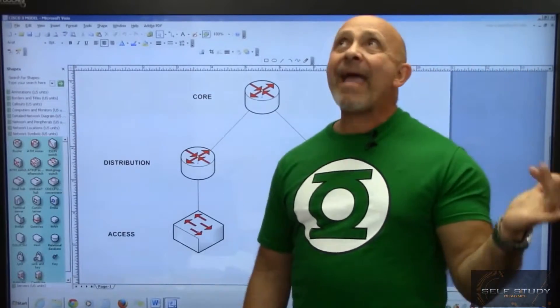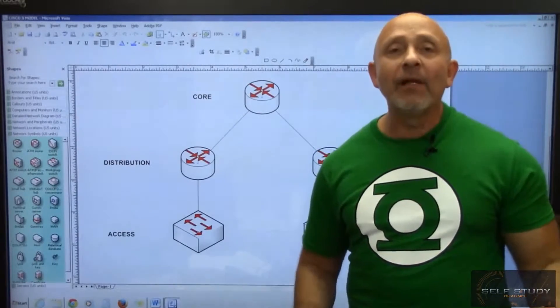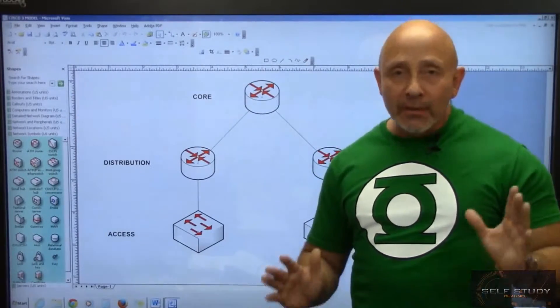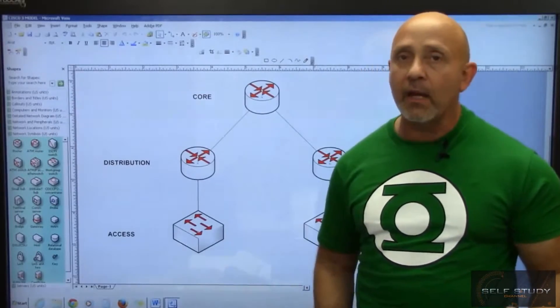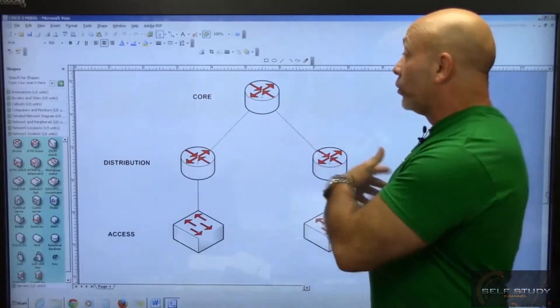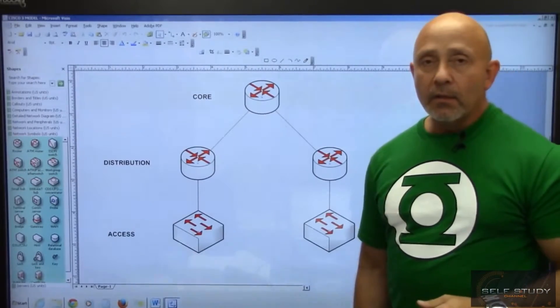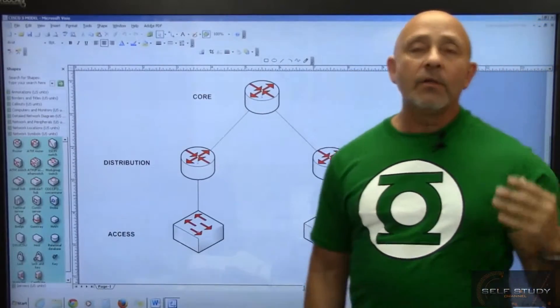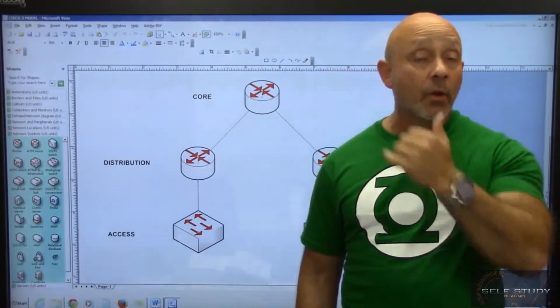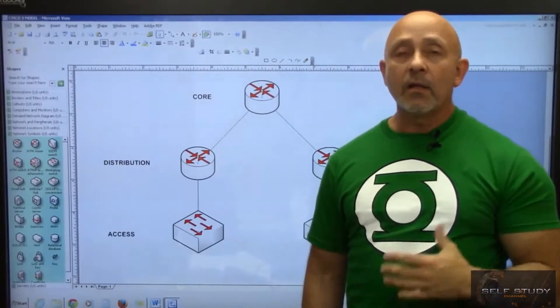You definitely want major redundancy on your core routers in case a link goes down somewhere. Let's say you have two links going to the other side—another core router. You definitely want redundant links to all your core connections, because if not, it's going to affect all your users.